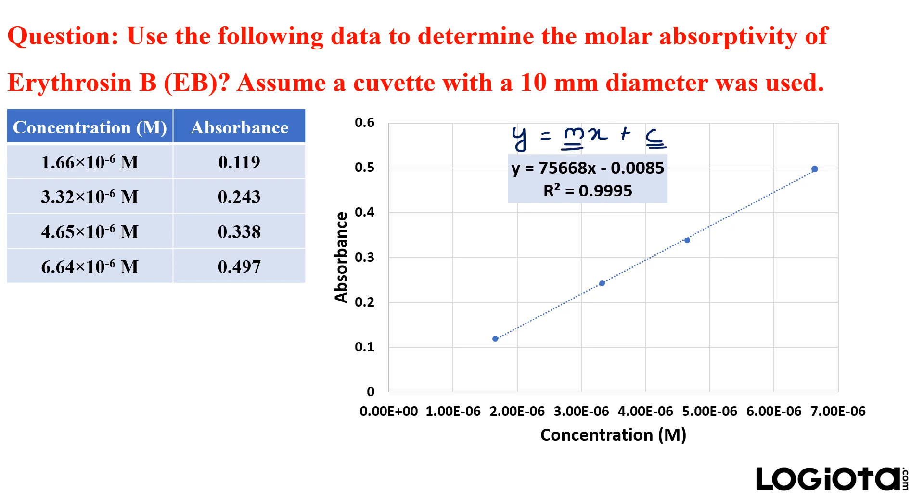y denotes the y-axis which is absorbance here and x is the concentration here. So you can see that the intercept which is 0.0085 is quite small and we will neglect this value. So we are left with y equals 75668x.